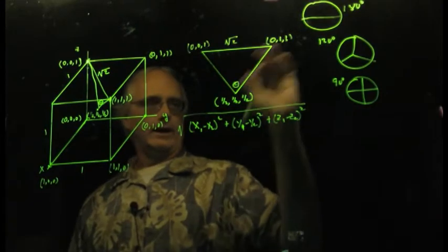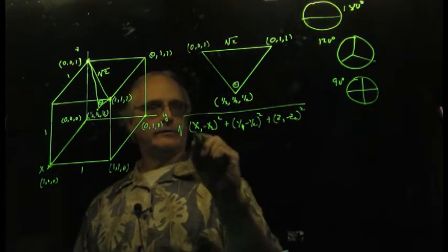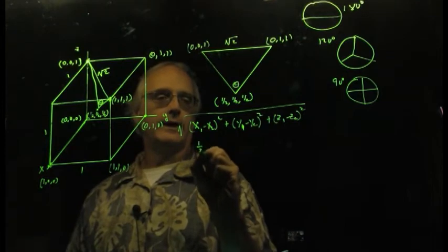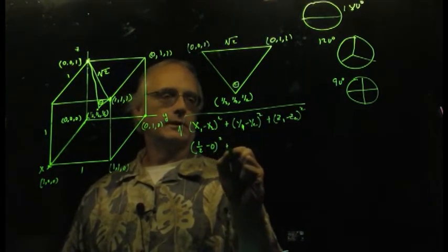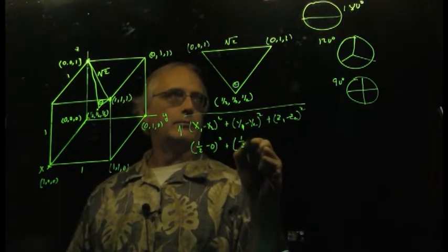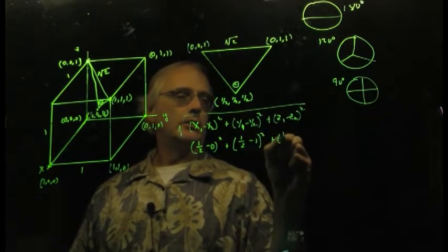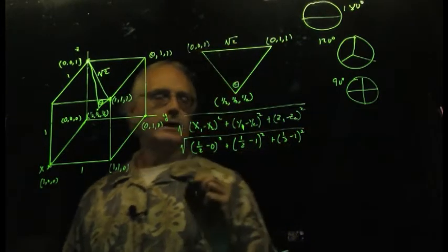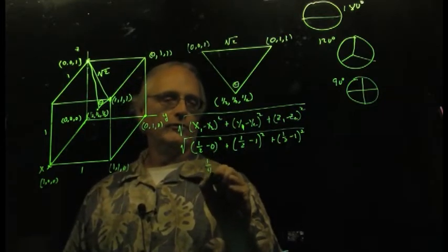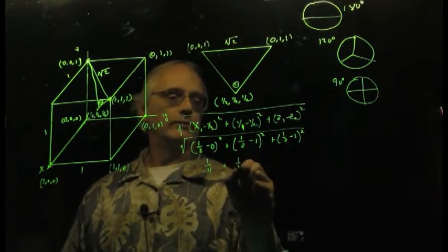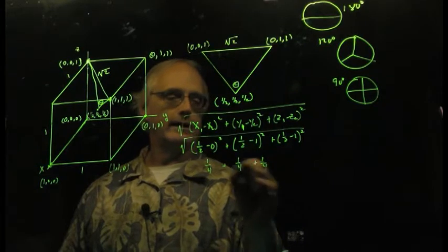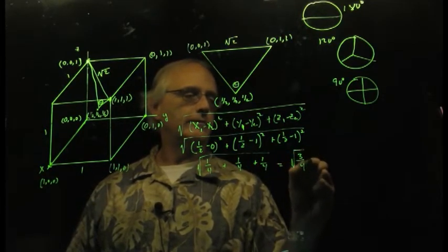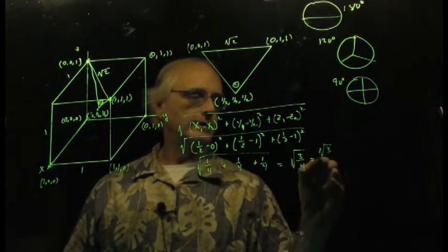Going ahead and plugging that in for a moment, I'll choose this as my x1, that point as my x2: (1/2 - 0)² + (1/2 - 1)² + (1/2 - 1)², square root of all that. And that breaks down to 1/4 + 1/4 + 1/4, square root of all that. In other words, 3/4, square root of 3/4, equals square root of 3 over 2.